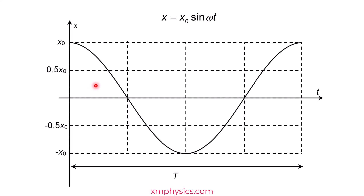Simple harmonic motion is not constant speed motion. It always travels more slowly near the extreme positions compared to when it's swinging past the equilibrium position. That's why it takes more than one-eighth of a period to go from extreme position to the half amplitude position, and it takes less than one-eighth of a period to go from the half amplitude position to the equilibrium position.